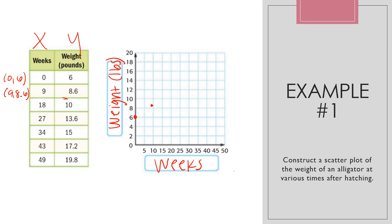Again, estimate to your best knowledge. I'm going to go to the right 18 and up 10. I'm going to go to the right 27 and up 13.6. I'm going to go to the right 34 and up 17.2. I'm going to go to the right 49 and up 19.8. Again, my direction says construct a scatter plot of the weight of an alligator at various times after hatching. You've completed example number one.